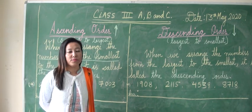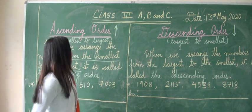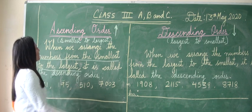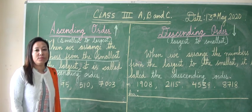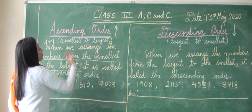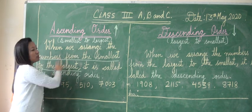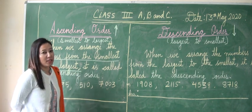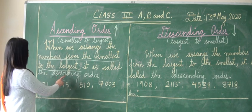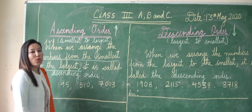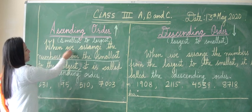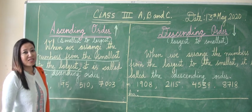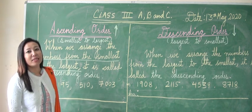Good morning all. Today let's learn ascending order followed by descending order. What do you mean by ascending order? As the definition says, when we arrange the numbers from the smallest to the largest, it is called the ascending order.